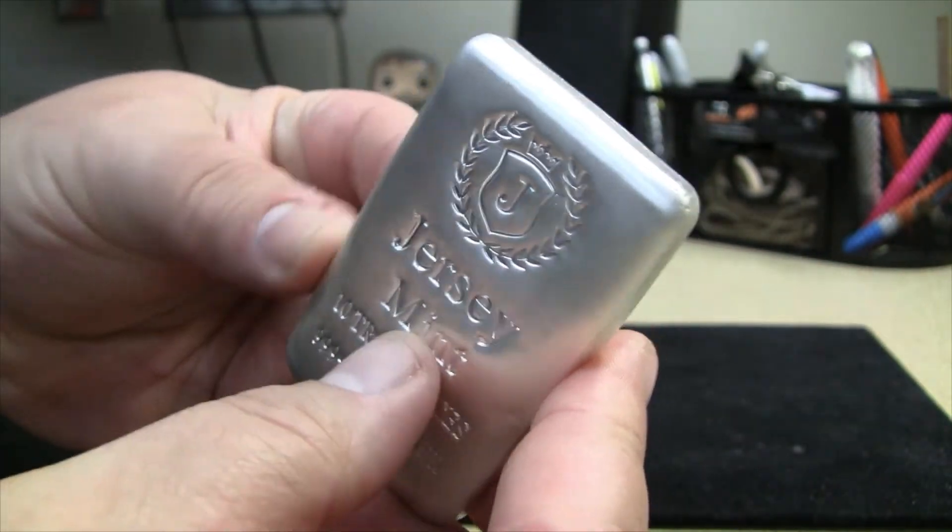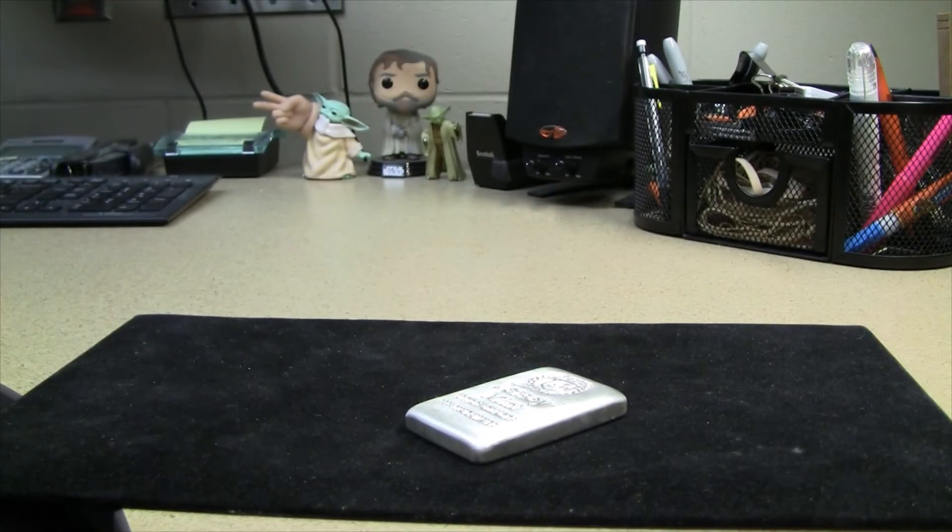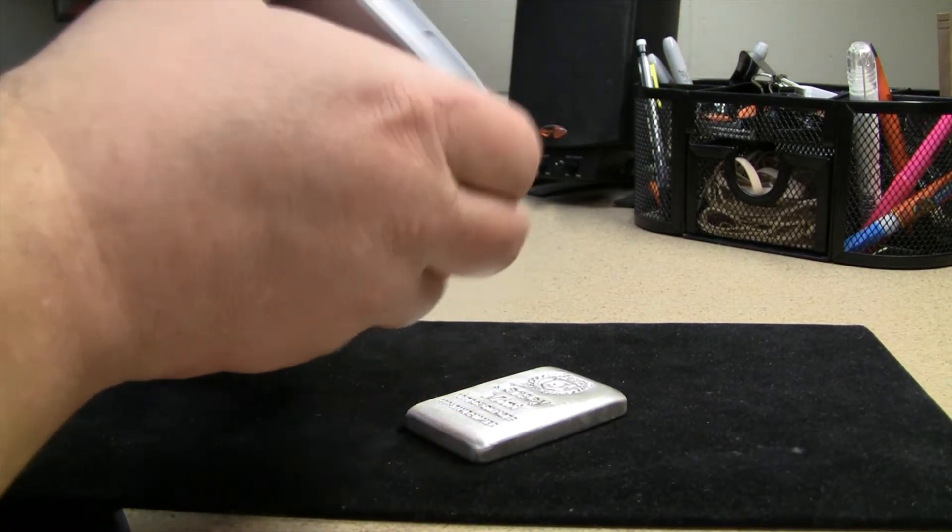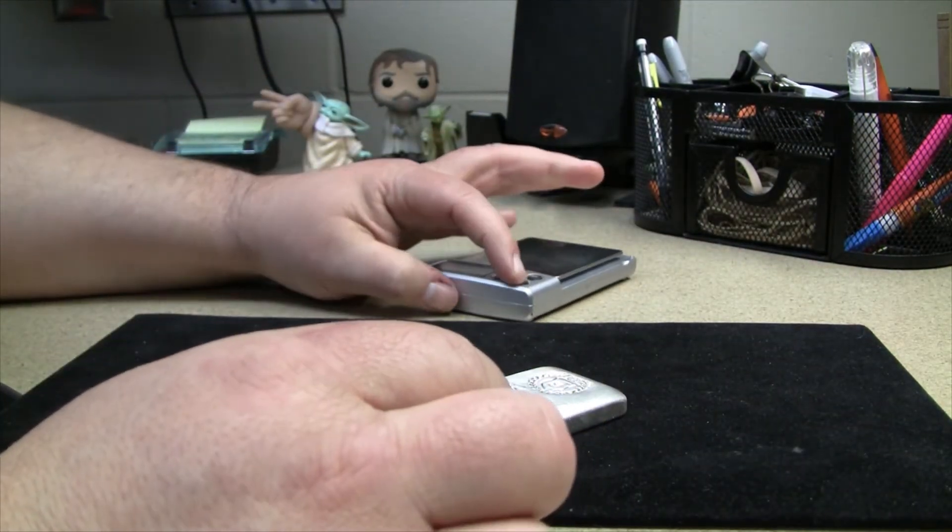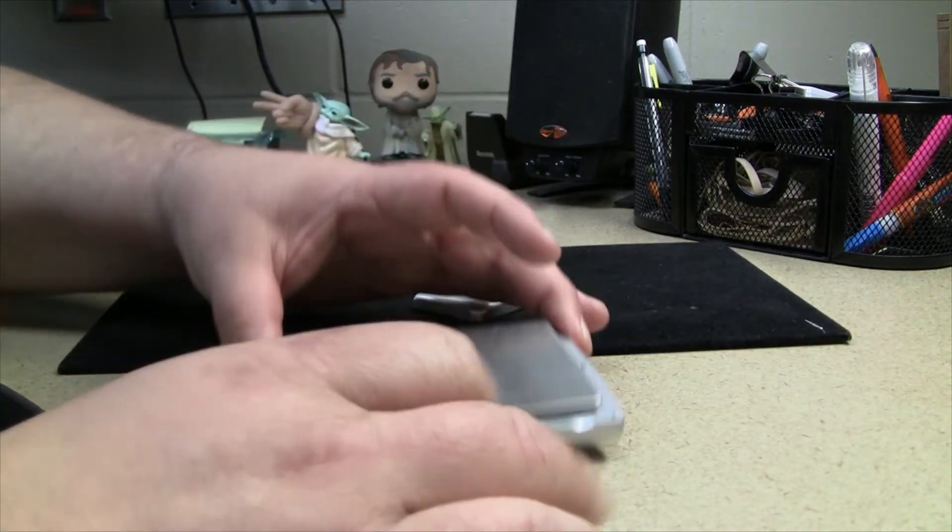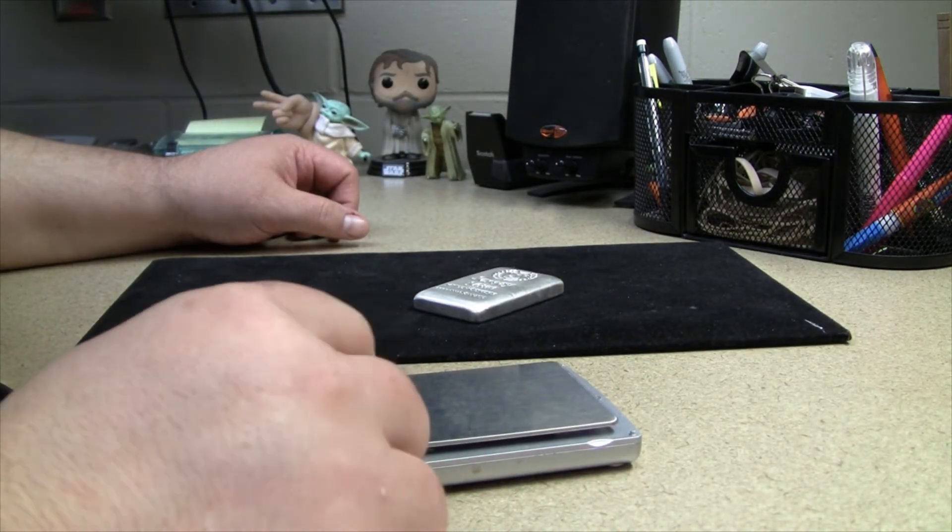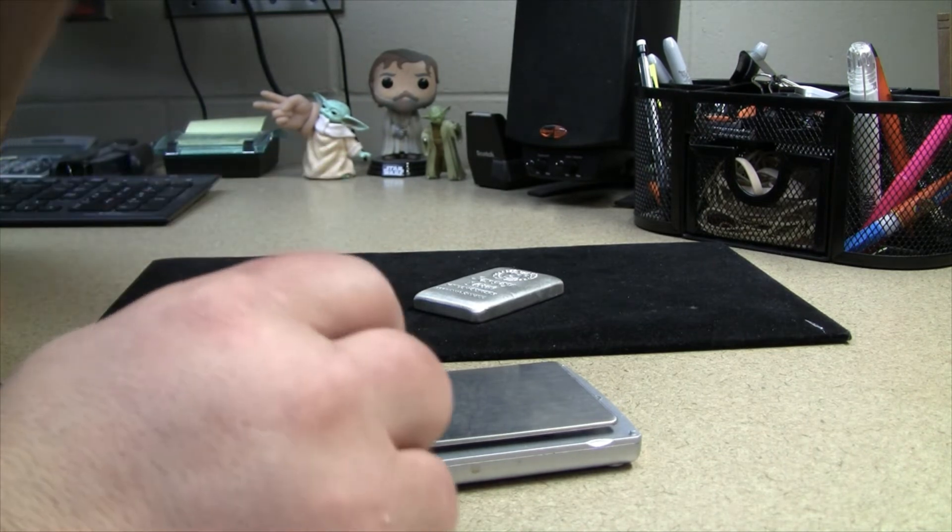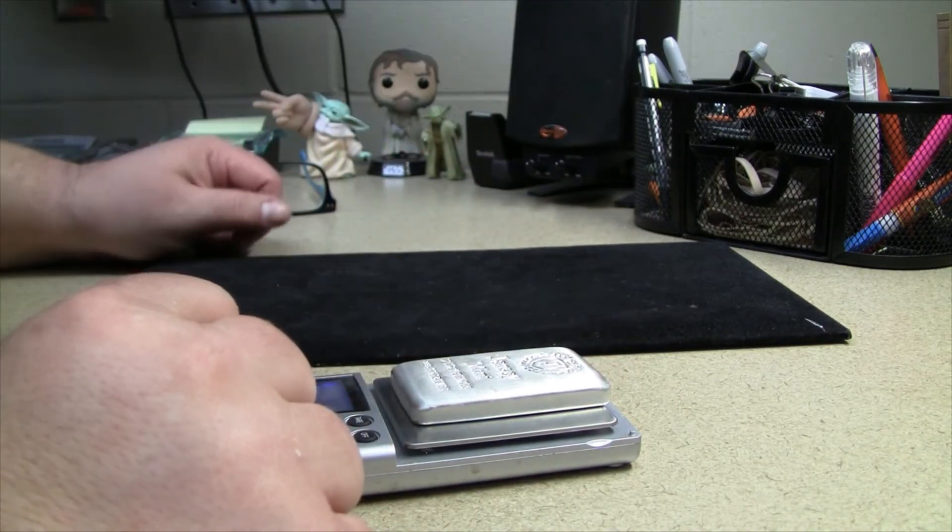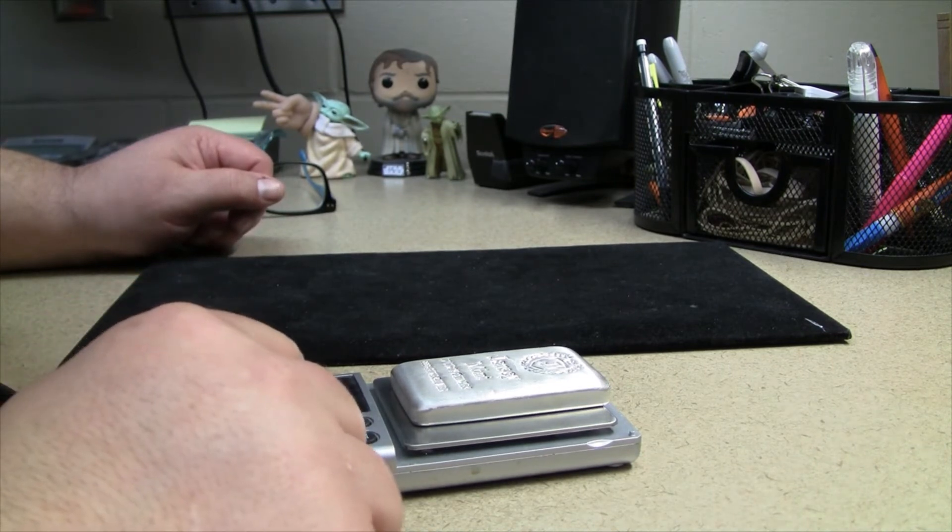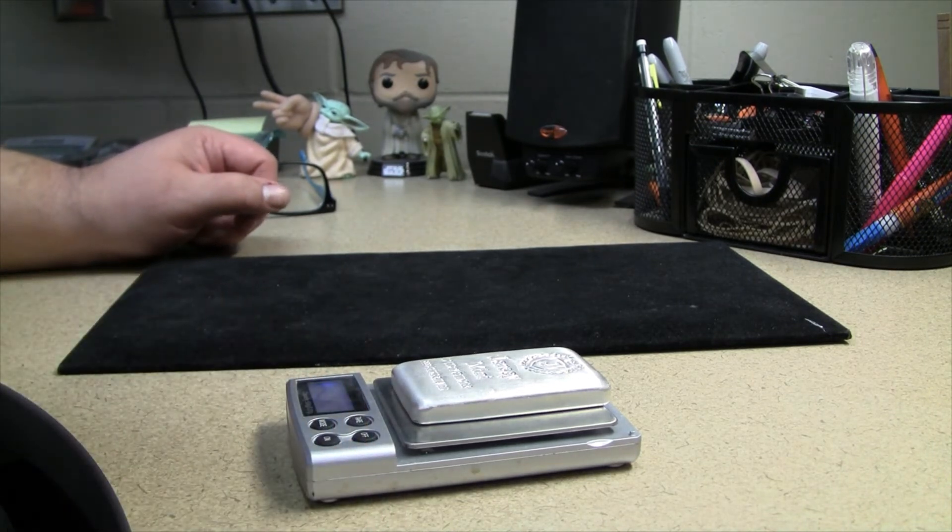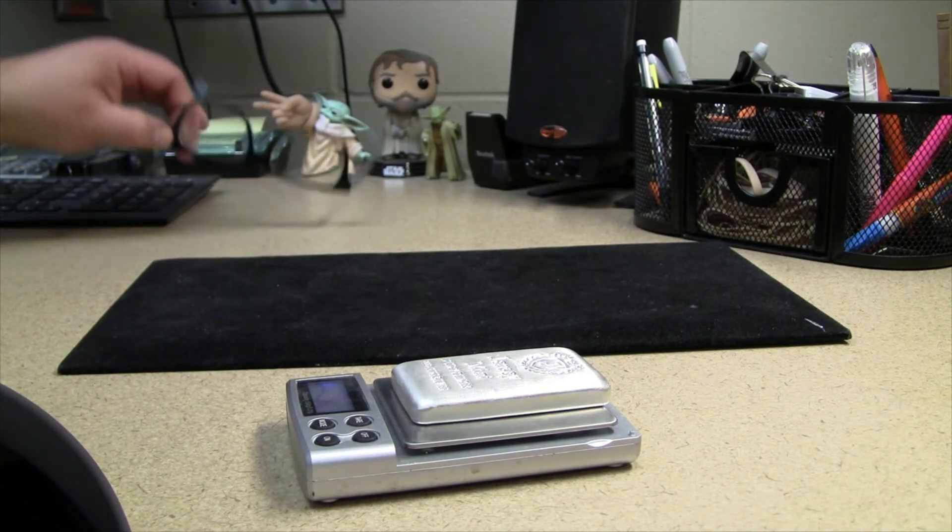Love that silver ring. All right, let me go ahead and get my scale here quick and we'll weigh this. All right, 10.02 troy ounces, so just a little bit above. We'll take that right.